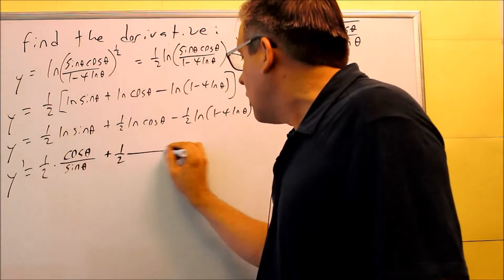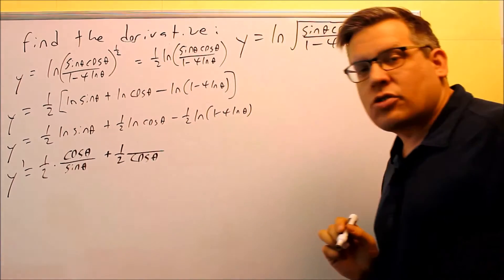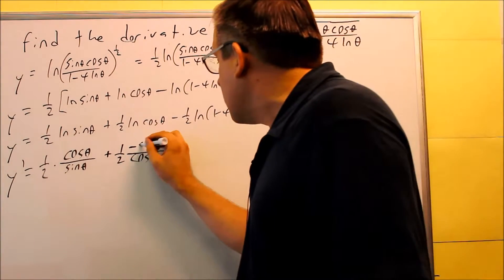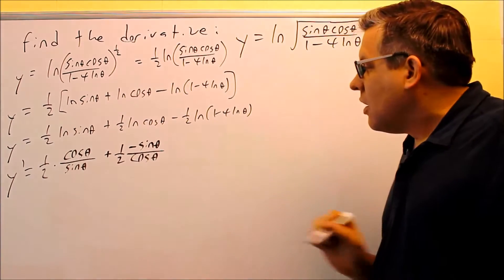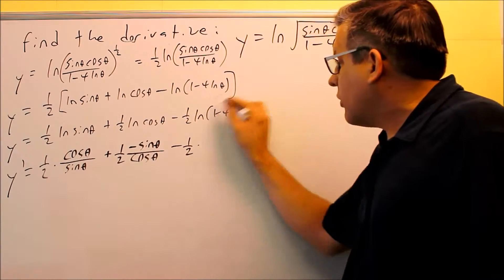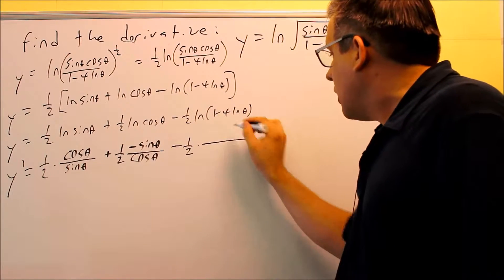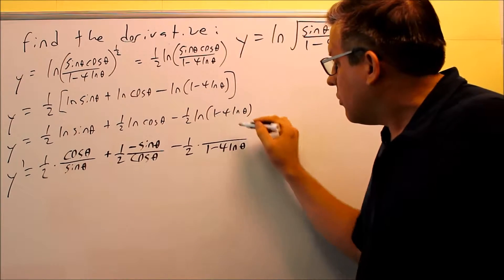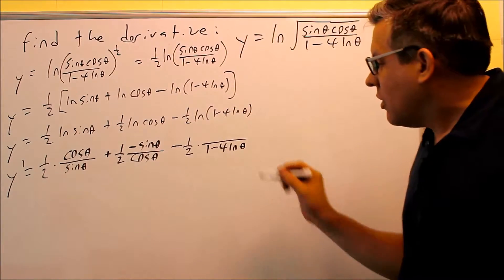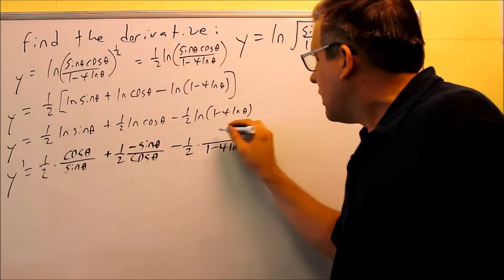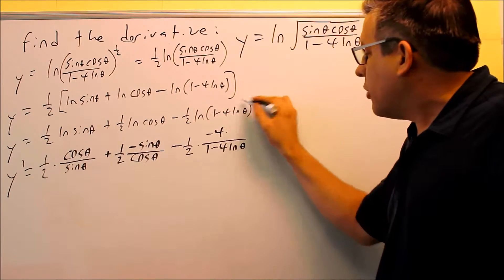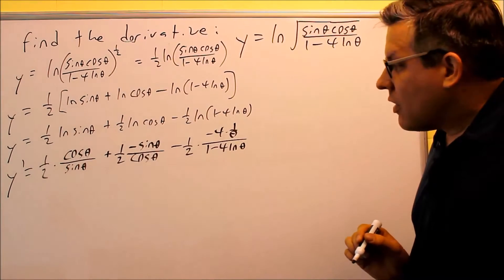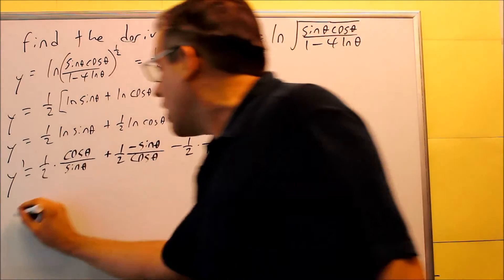Next, 1/2 — cosine goes on the bottom because that's your u this time. On top, the derivative of cosine is negative sine. Then minus 1/2: the expression inside the parentheses, (1 minus 4 ln θ), goes on the bottom as your u. On top I take its derivative: derivative of 1 is 0, I have minus 4, and then multiplied by the derivative of ln theta which is 1 over theta.